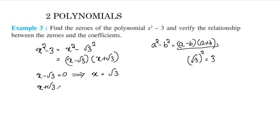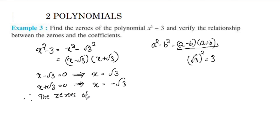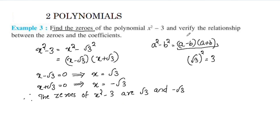x plus root 3 equals 0 gives x equals negative root 3. Therefore, the zeros of x² - 3 are root 3 and negative root 3.